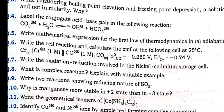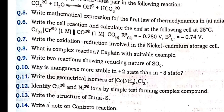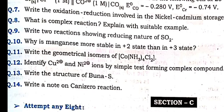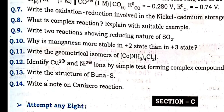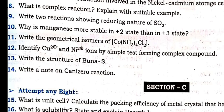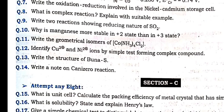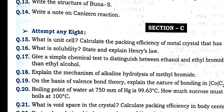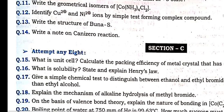Cell reaction: calculate the EMF of the cell — very simple, from electrochemistry. Oxidation-reduction involved in nickel-cadmium storage cell, from electrochemistry. What is a complex reaction? Explain with a suitable example — chemical kinetics. Write two reactions showing the reducing nature of SO₂. Why is manganese more stable in +2 than +3 oxidation state — d and f block elements. Next: coordination compound, geometrical isomers. Identify Cu²⁺ and Ni²⁺ ions by simple test, forming complex compounds. Draw the structure of Buna-S from polymer chapter. Write a note on Cannizzaro reaction from aldehyde, ketone and carboxylic acid — for compounds which do not contain alpha hydrogen atom. If the aldehyde or ketone contains alpha hydrogen, it undergoes aldol condensation.